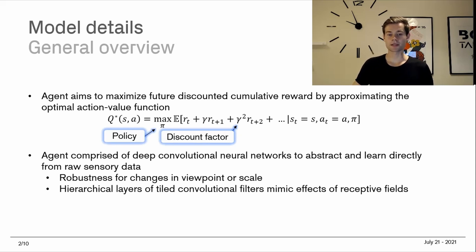The agent is comprised of deep convolutional neural networks to abstractly learn from raw sensory data. These convolutional neural networks are a special type of neural networks that have been shown to be very effective on image recognition and various image classification tasks. They're comprised of hierarchical layers of tiled convolutional filters that mimic the effects of receptive fields in the brain. This has the effect of providing robustness for changes in viewpoint and scale.